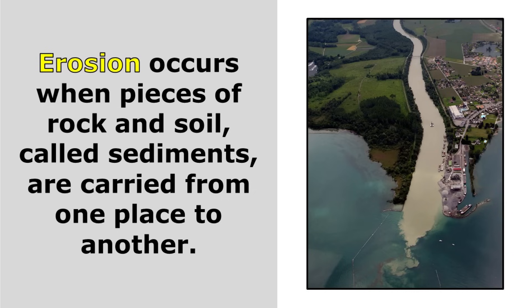Our next term is erosion. Erosion occurs when pieces of rock and soil, called sediments, are carried from one place to another. You can see that happening here in this river — it is brown because it is so full of sediments, and it's carrying them from upstream down the river from one place to another. This is a great example of erosion.